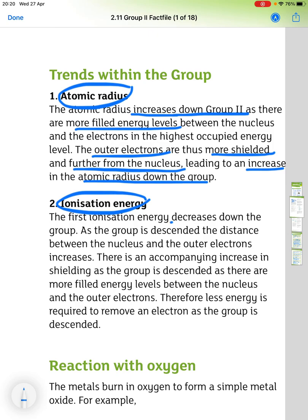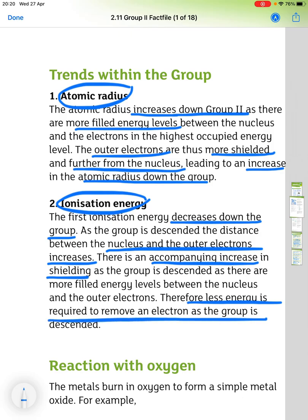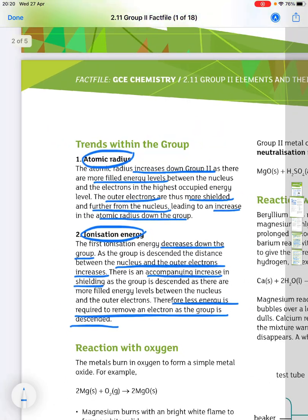For ionization energy, it also decreases down the group. As the group is descended, the distance between the nucleus and the outer electrons increases. And there's an accompanying increase in shielding as the group is descended, as there are again more filled energy levels between the nucleus and the outer electrons. Therefore, less energy is required to remove an electron as the group is descended.